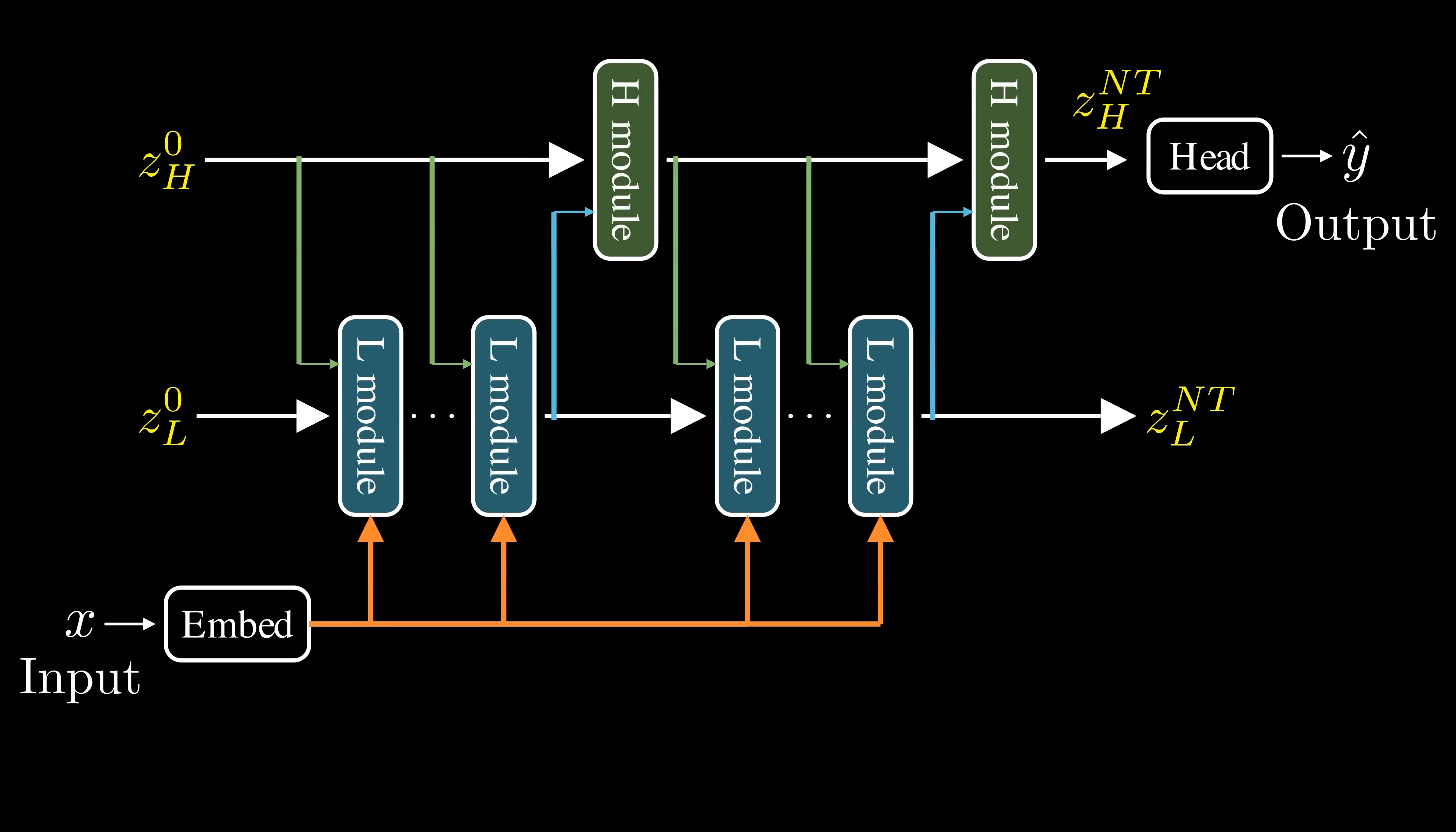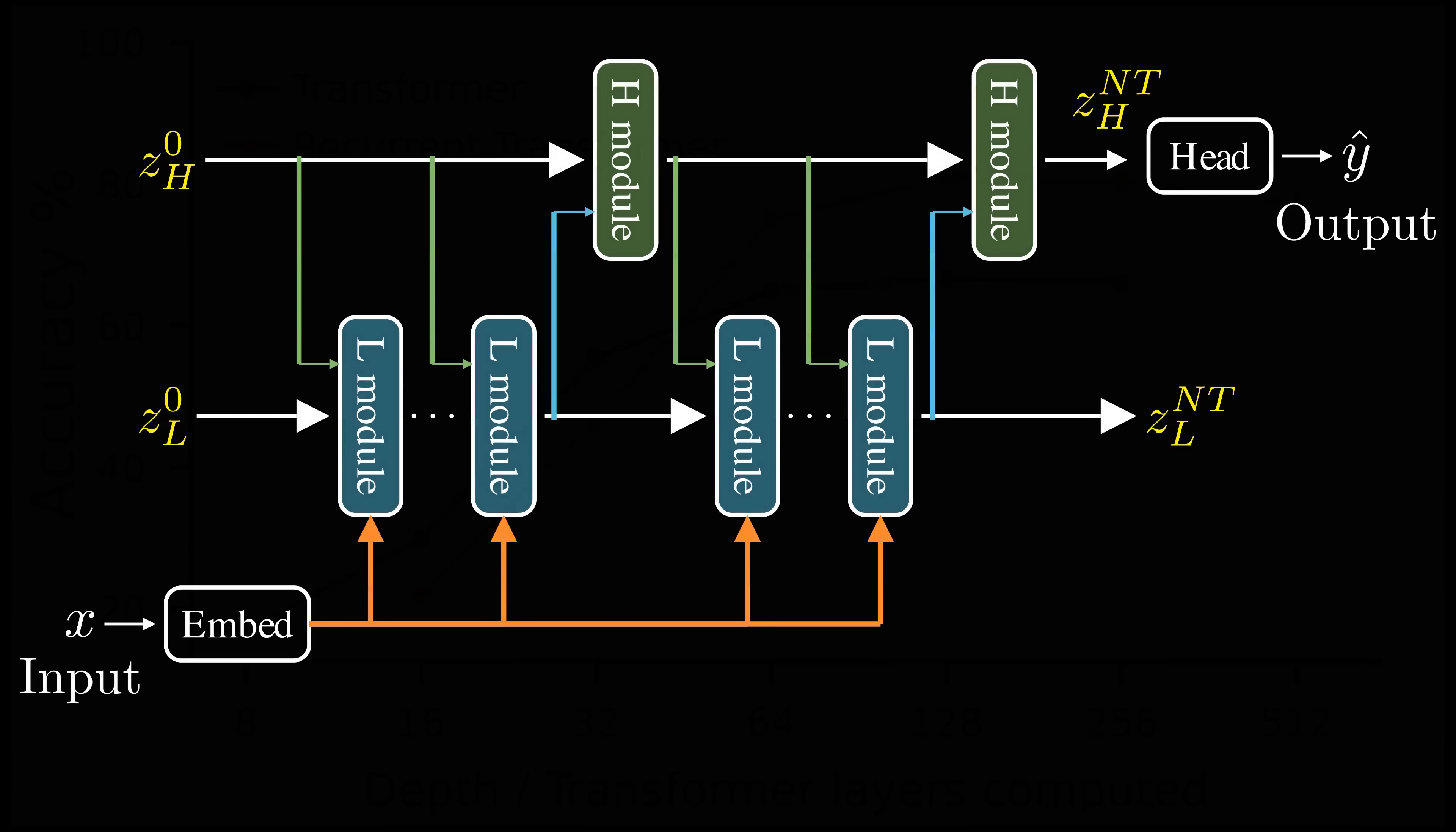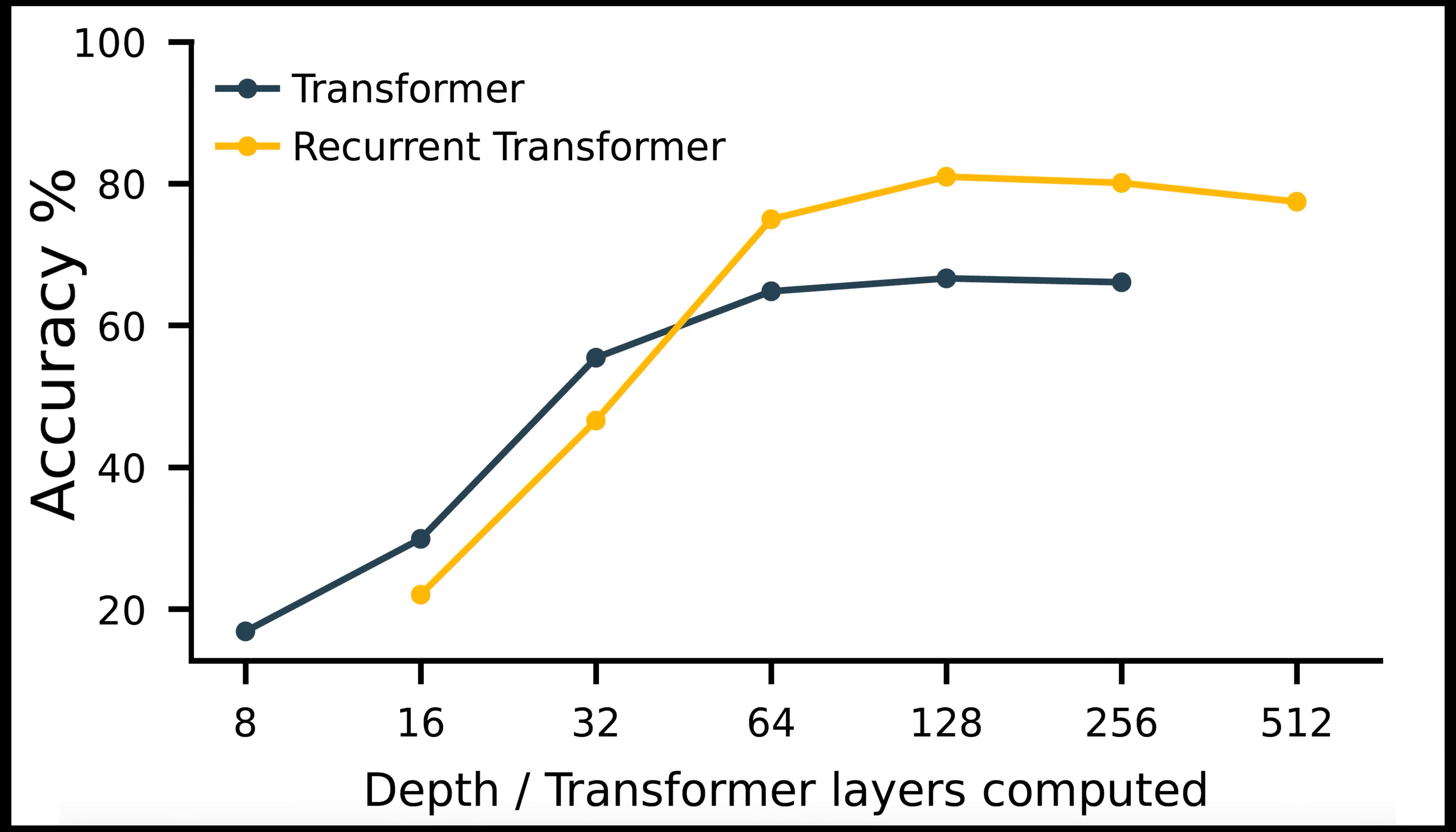The overall process consists of N high-level cycles, each containing T low-level steps. In total, the model performs N times T iterations. Let's see how well this works.